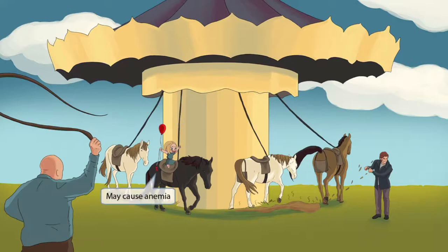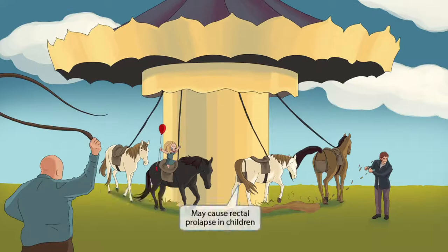The little girl also has some red balloons. Notice that one of them is completely deflated. Red balloons are a symbol for red blood cells, so this deflated balloon should help you remember that whipworm may cause anemia.